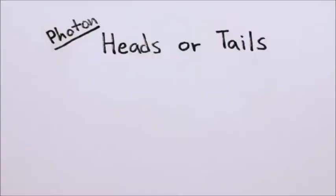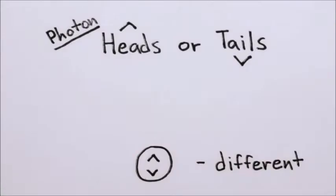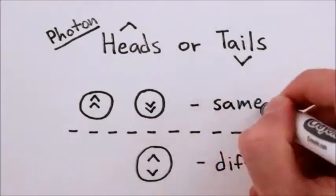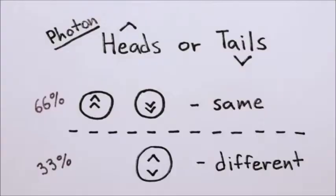So in a photon flipping experiment, that means there's only one way for them to be in different states, but two ways for them to be in the same state. So they're more likely to be in the same state, and in general,